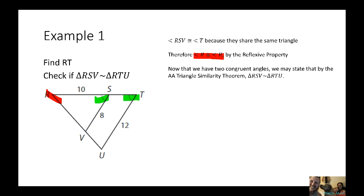Now that we have two congruent angles, we may state by the AA triangle similarity theorem that triangle RSV is similar to triangle RTU. And there's just the application of the AA triangle similarity theorem. Now that we know our sides must be proportional in order to be similar, because that's the definition of similarity, the sides have to be proportional, and the angles have to be congruent. We may solve for RT.